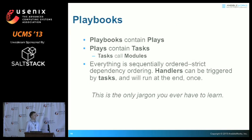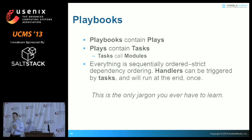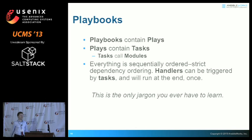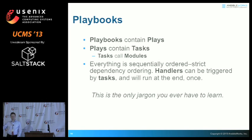A playbook is the top-level descriptor for your automation content. A playbook is made up of plays — plays target an individual set of hosts. You might have a play for your web servers, a play for your database servers, a play for your load balancers, and a common play that applies to everything. Each play has a list of tasks; the tasks call modules. Everything happens in strict order, the way you specify it. There's no undefined dependency ordering — if you need to express dependencies, you turn them into a step-by-step list.